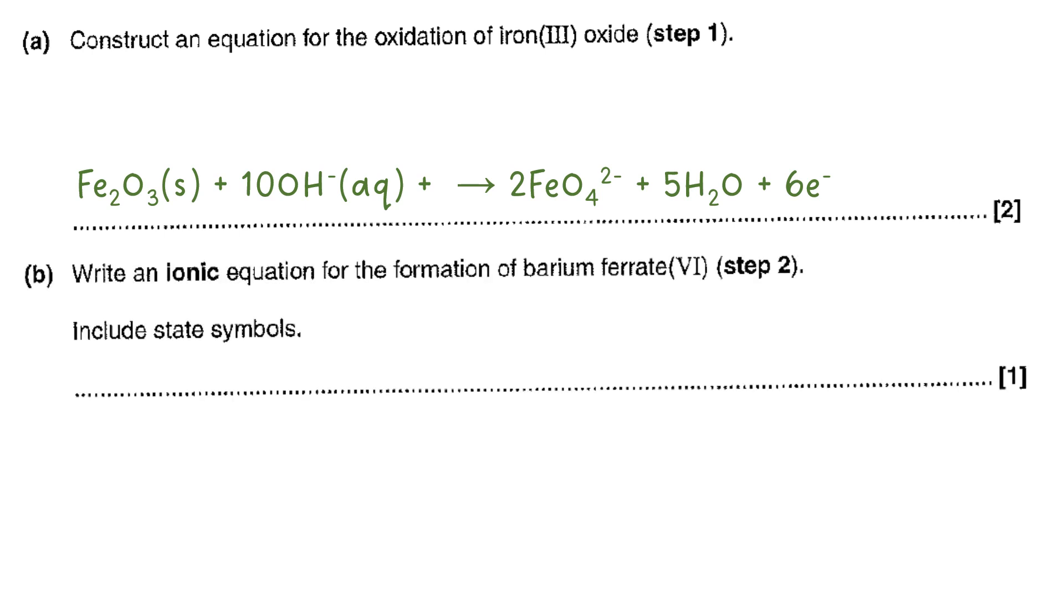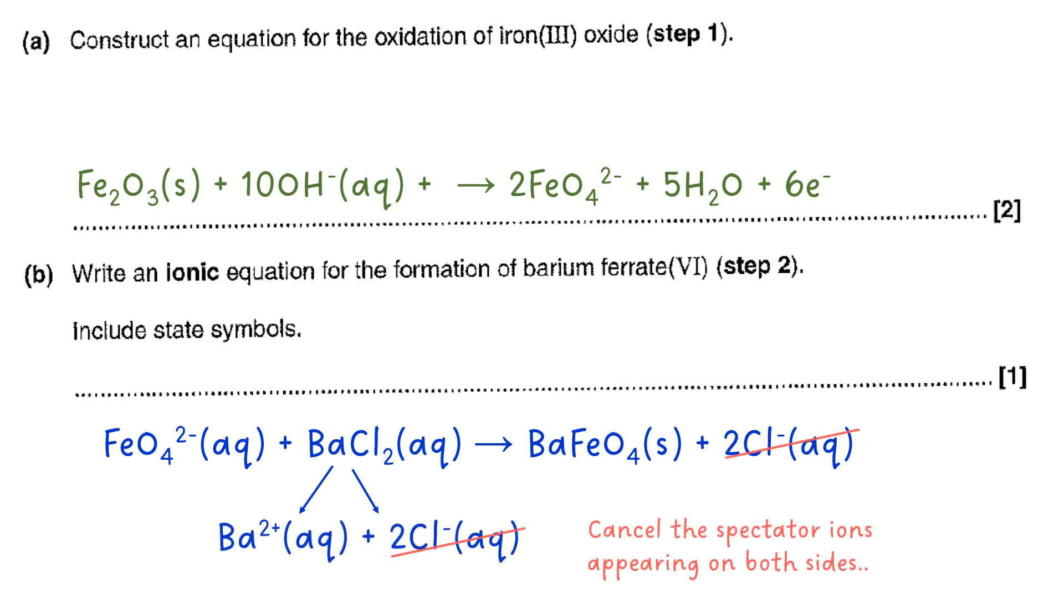An ionic equation for the formation of barium ferrate requires us to actually look at what's aqueous. Now FeO4^2- is aqueous but that doesn't break up into anything else. That's an ion in its own right. But barium chloride has barium ions and chloride ions. So now you can see what can be cancelled both sides. In other words the spectator ions. So then we put that in as our ionic equation and they want us to include state symbols so we have to do that as well.